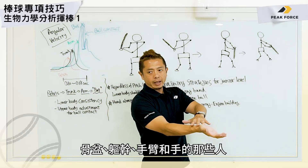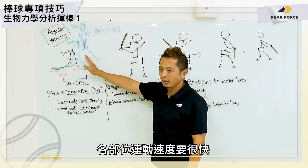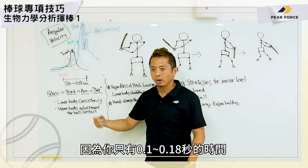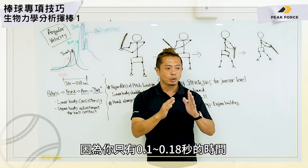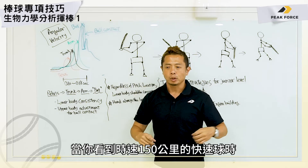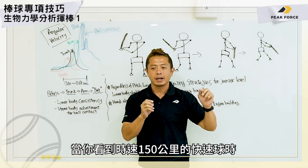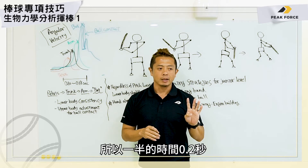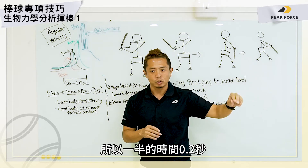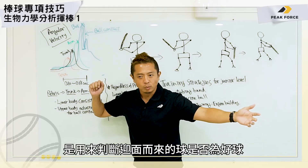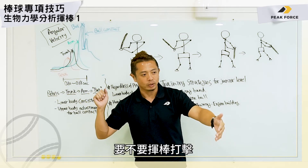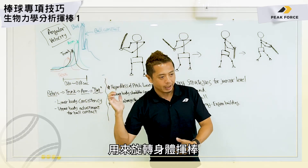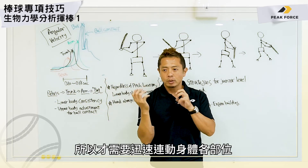This sequence has to happen really fast, because you only have a time window of about 0.1 to 0.18 seconds. If you see a 150 kilo fastball, you only have 0.4 seconds total. The first half — about 0.2 seconds — you recognize whether it's a strike you want to hit or not. Then you have that remaining time window to rotate your body. So it has to happen really quickly.